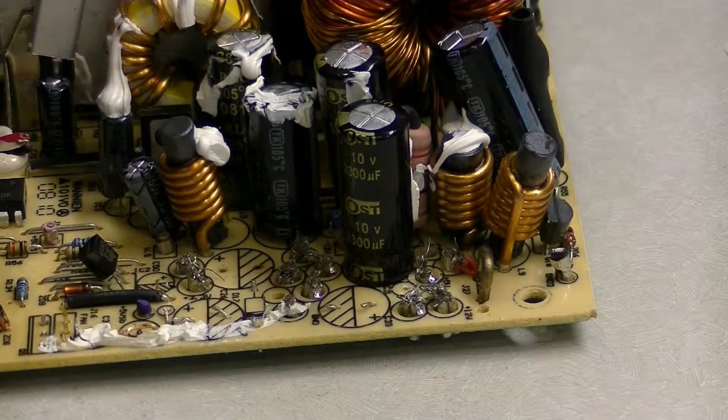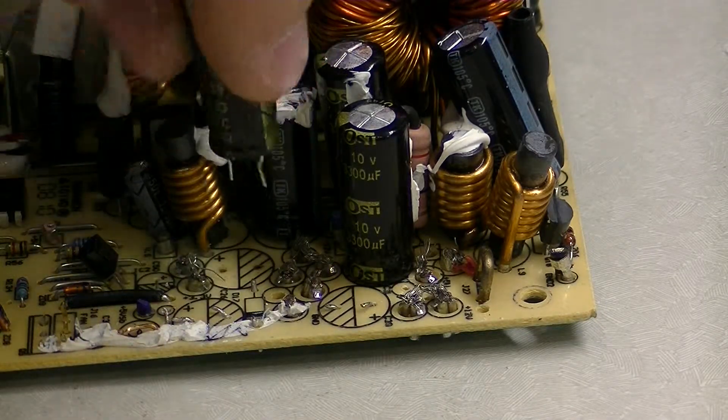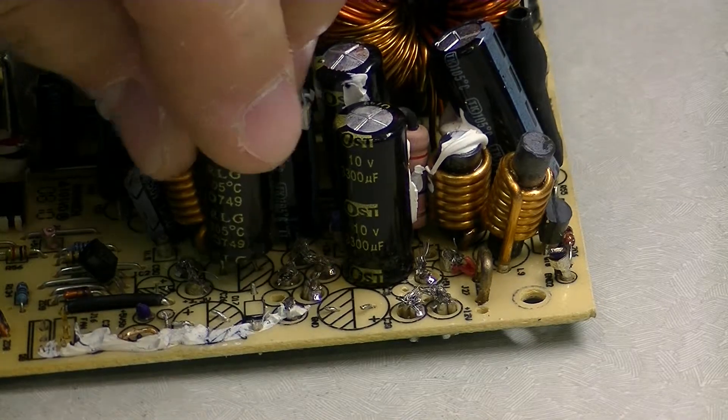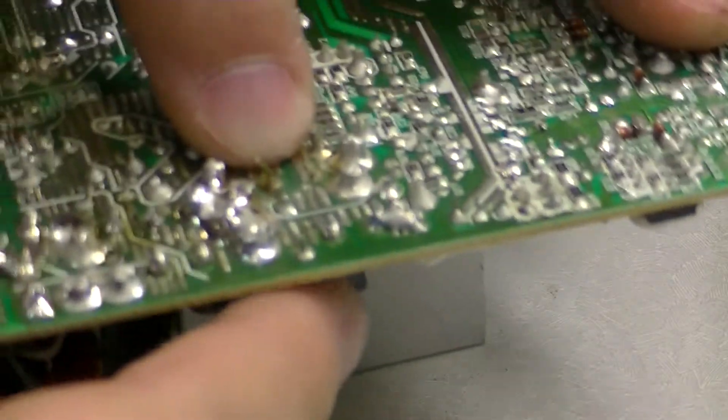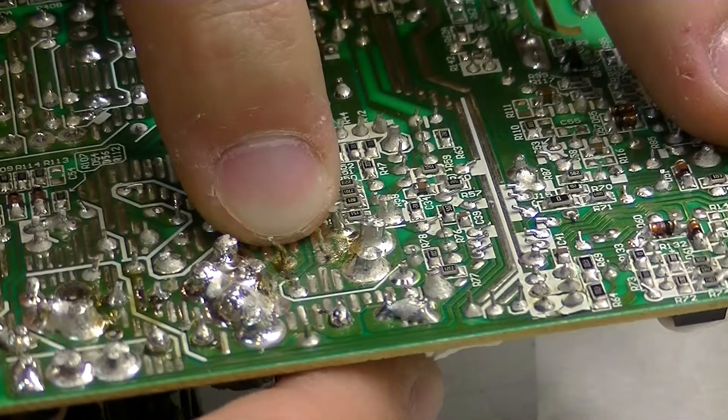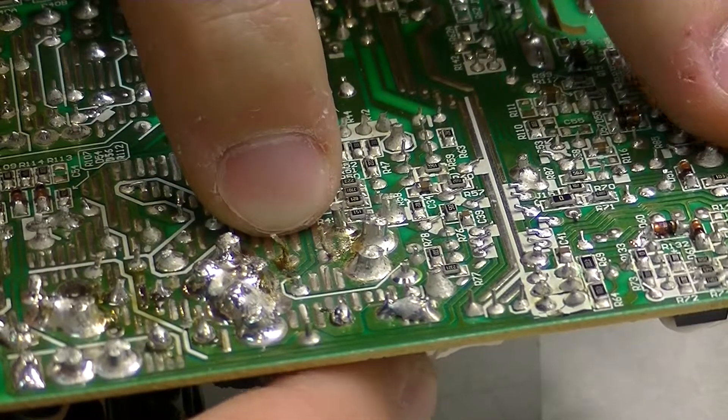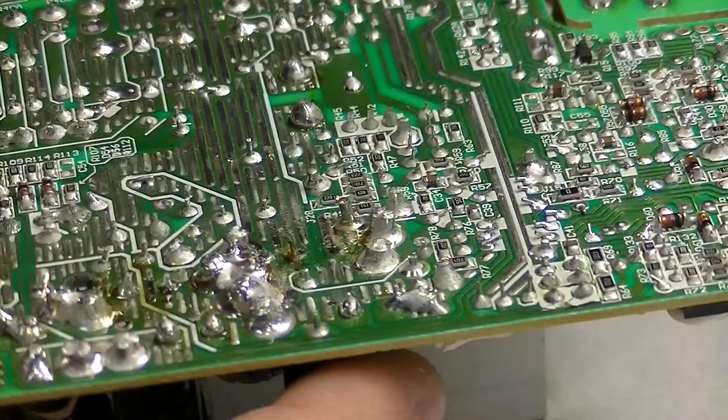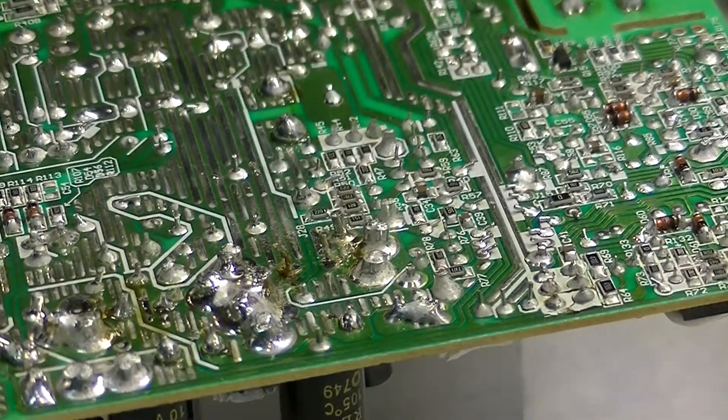We're going to fit our capacitor back in. When you get these brand new, the leads that go through are perfectly straight and significantly longer. When you're done, you clip off the excess so you don't short out any other components in the area. You don't want to fix your board just to have to go back and re-solder something because you shorted it out.